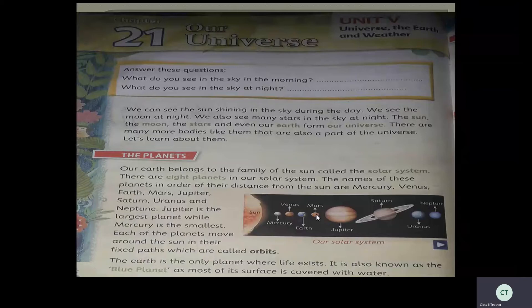The first one is the planets. Our earth belongs to the family of the sun called the solar system. There are eight planets in our solar system. The names of these planets in order of their distance from the sun are Mercury, Venus, Earth, Mars, Jupiter, Saturn, Uranus, and Neptune. Jupiter is the largest planet while Mercury is the smallest. Each of the planets moves around the sun in its fixed path, which is called an orbit.